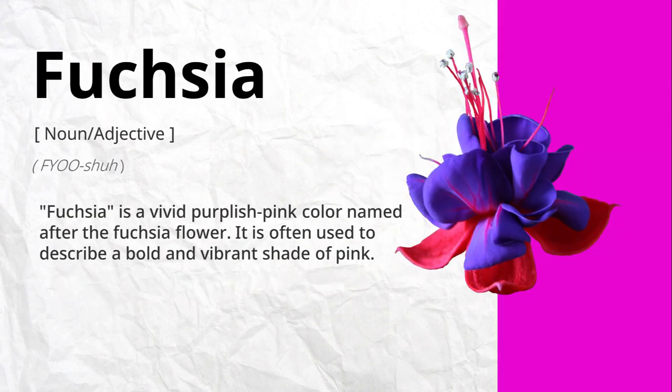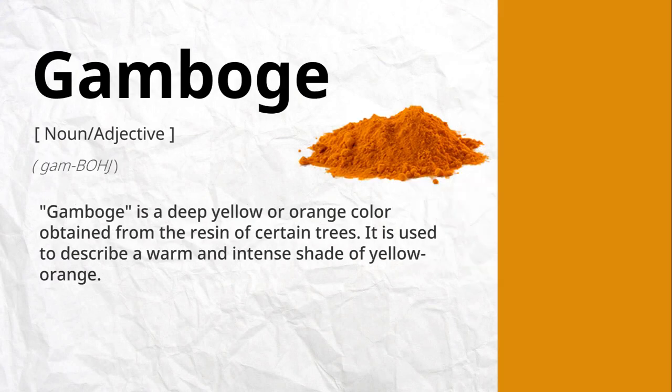Fuchsia is a vivid, purplish-pink color named after the fuchsia flower. It is often used to describe a bold and vibrant shade of pink. Gamboge is a deep yellow or orange color obtained from the resin of certain trees. It is used to describe a warm and intense shade of yellow-orange.